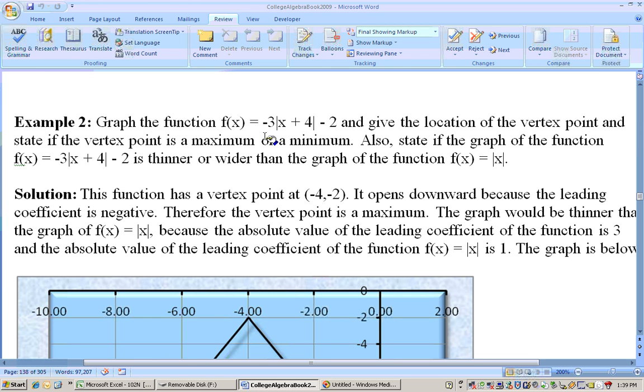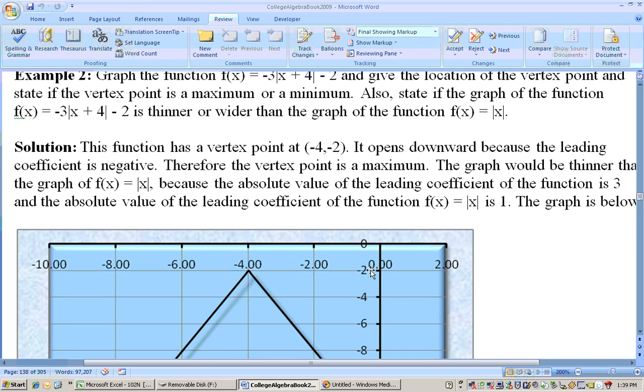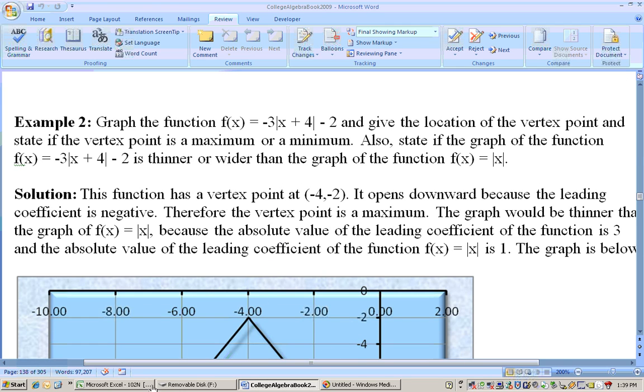Let's graph this one. Negative 3 times the quantity x plus 4 minus 2. Well, first of all, it's going to open downward because this is negative. It's going to be pointy, V-shaped, upside down V-shaped because it's an absolute value equation. And the vertex point is going to be at negative 4, negative 2. So, and you can see that right here. Tell you what, let's go ahead and put that in on Excel.